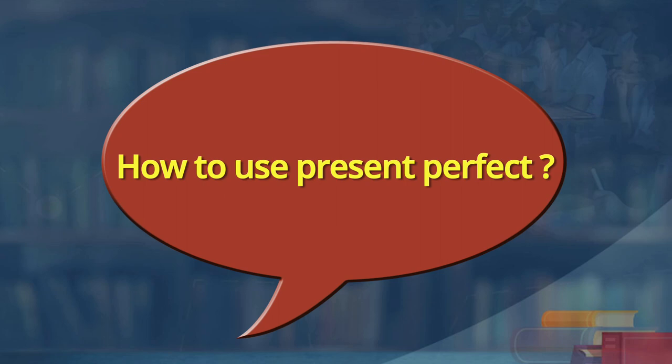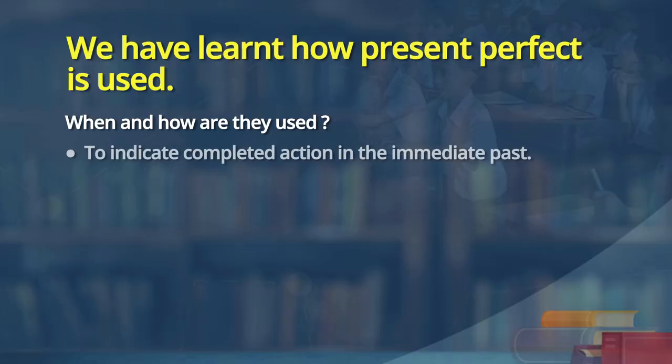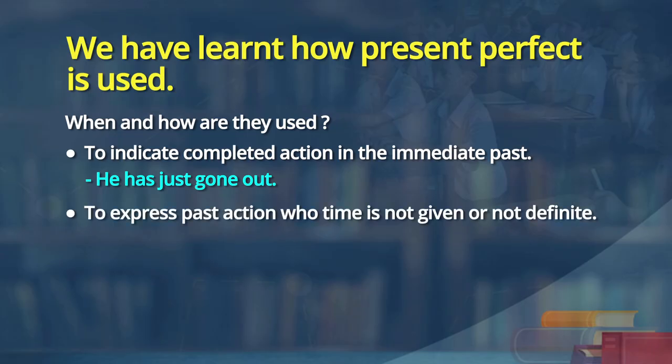We know how to use present perfect. What are the occasions where present perfect is used? We have seen one part of it, and there are other occasions. The first is to indicate completed action in the immediate past — for example, 'I have just arrived,' 'He has just gone out.' The second is to express a past action whose time is not given or not definite — a past action has taken place but the exact time is not defined.